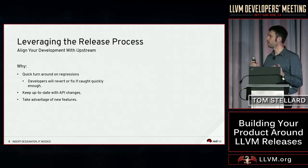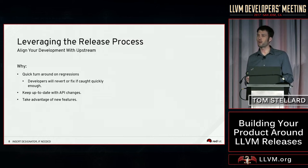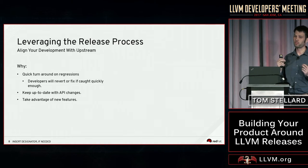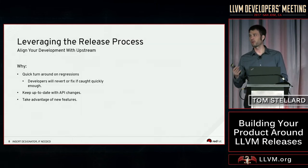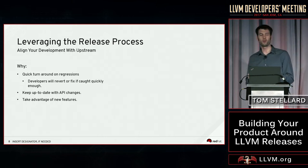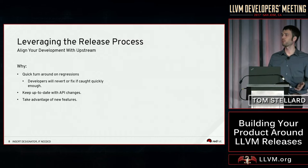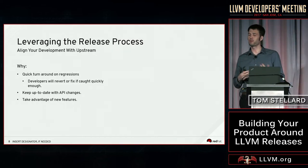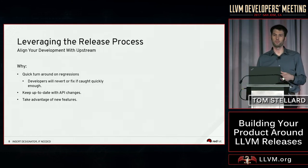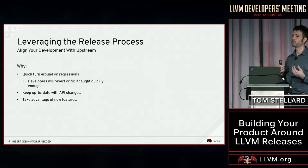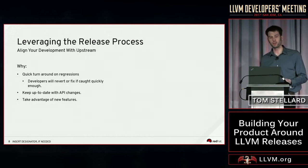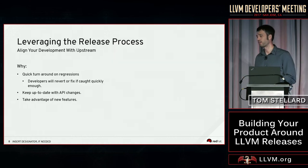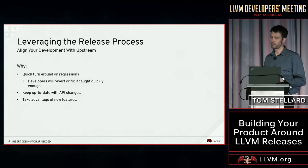Another reason to align with upstream is to keep up to date with API changes, which are one of the biggest causes of breakages. If someone does an API change that doesn't work for you, you can catch it right away and reply to say, let's rework this a little bit — and maybe get that fixed to save yourself headaches in the merge process. You also get to take advantage of new features right away, whether it's performance improvements or compile time improvements.